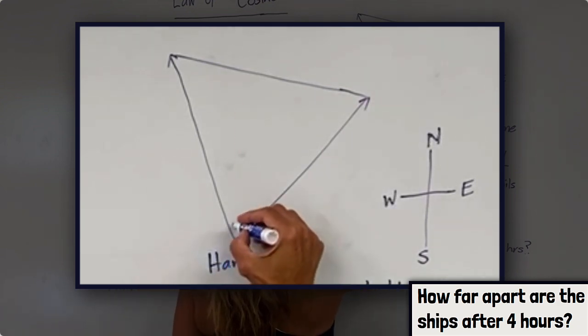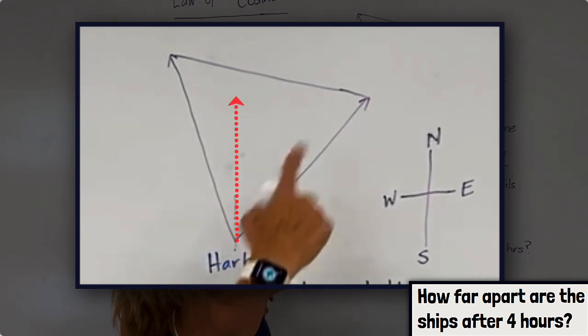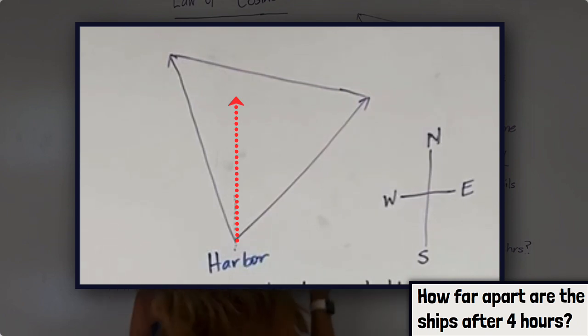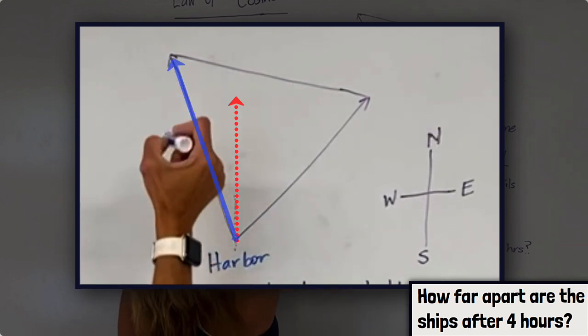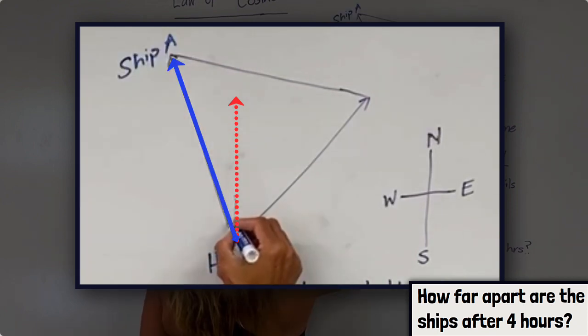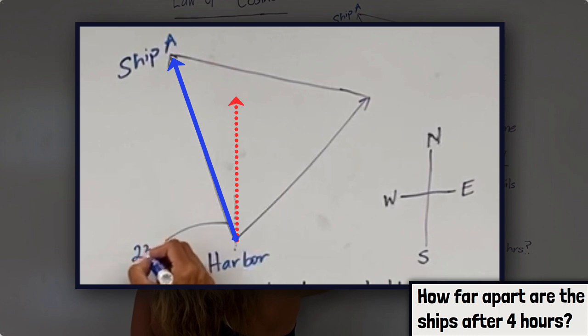Well, if we know this is due north and I have a little compass over here, then north 23 degrees west would be the first ship. So this would be ship A, and there is the 23-degree measurement.